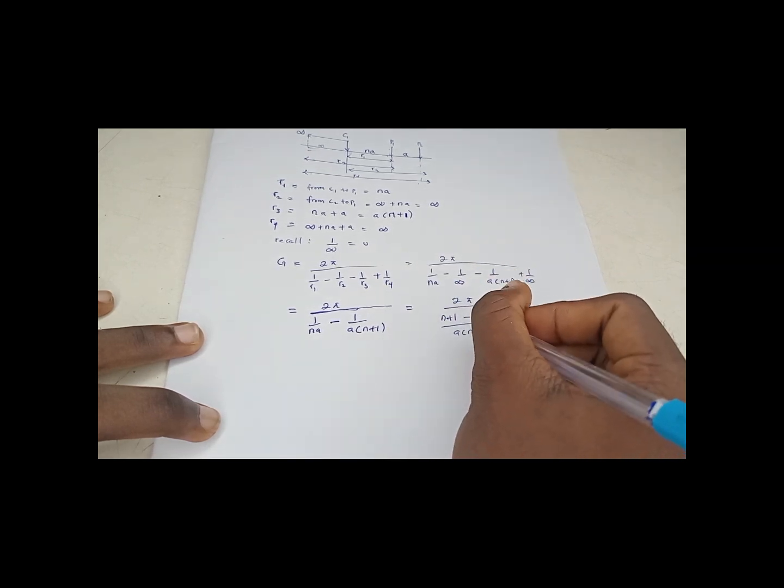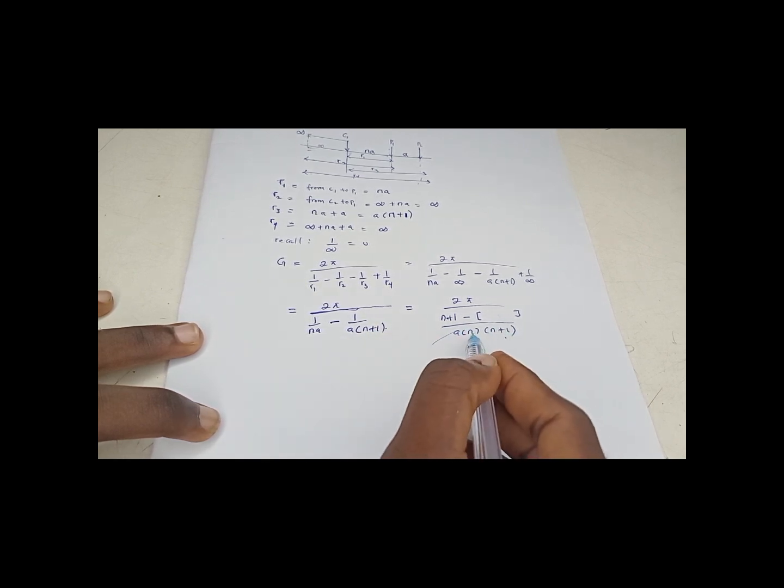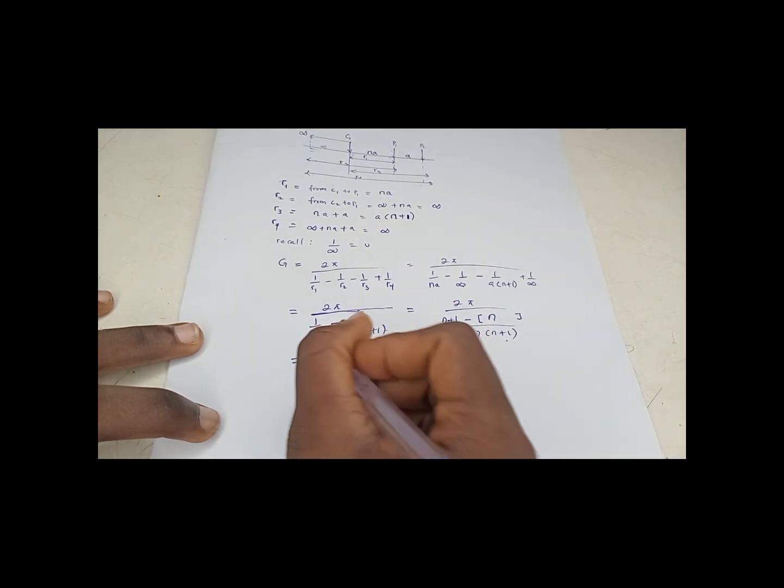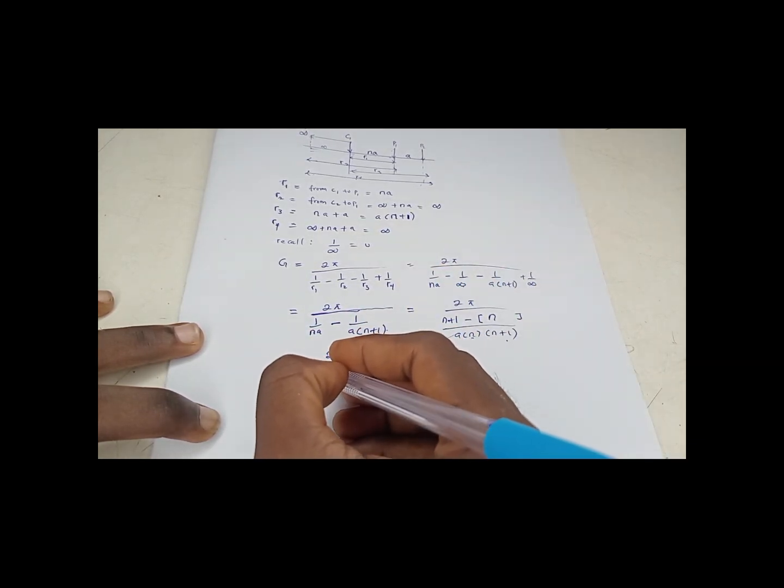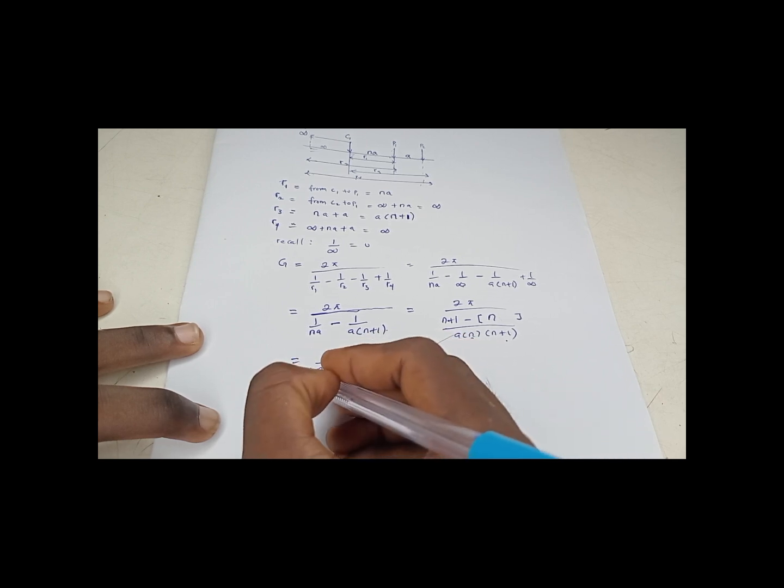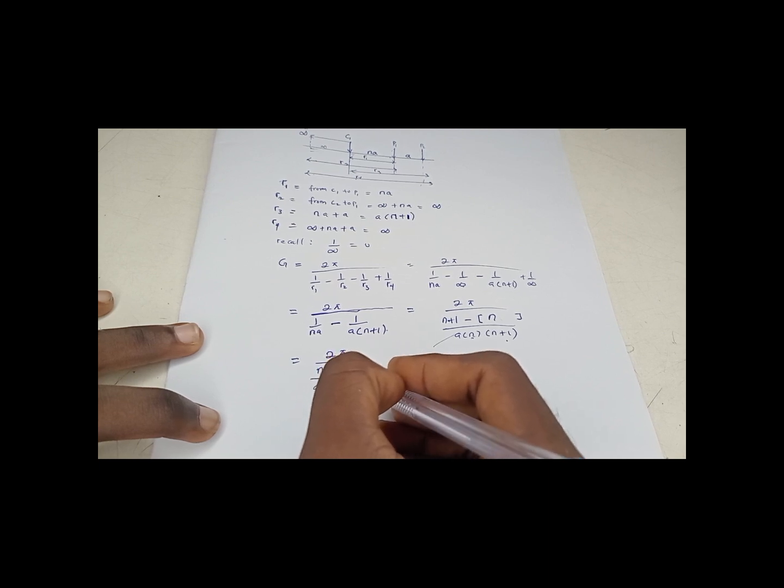Minus, at any time you have minus, put a square bracket before it starts finding. So A times (N plus 1) in this. If you have A and N plus, you mean N. So minus N. So we have 2π over (N plus 1 minus N) over A bracket N bracket (N plus 1).